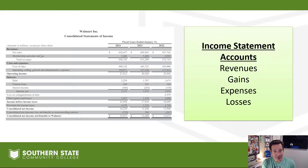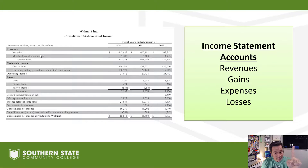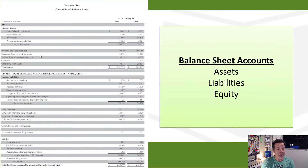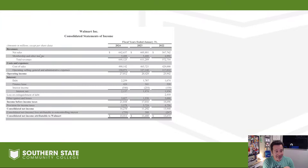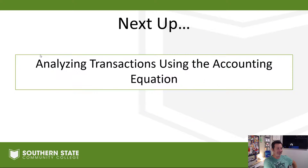On our income statement we have revenues, gains, expenses, and losses — those accounts live on the income statement. Accounts aren't shady — they're not like that shady person who has a secret family in another town. Accounts live in one place and they stay there. Balance sheet accounts stay on the balance sheet; income statement accounts stay on the income statement. They have one home and they are faithful to it.